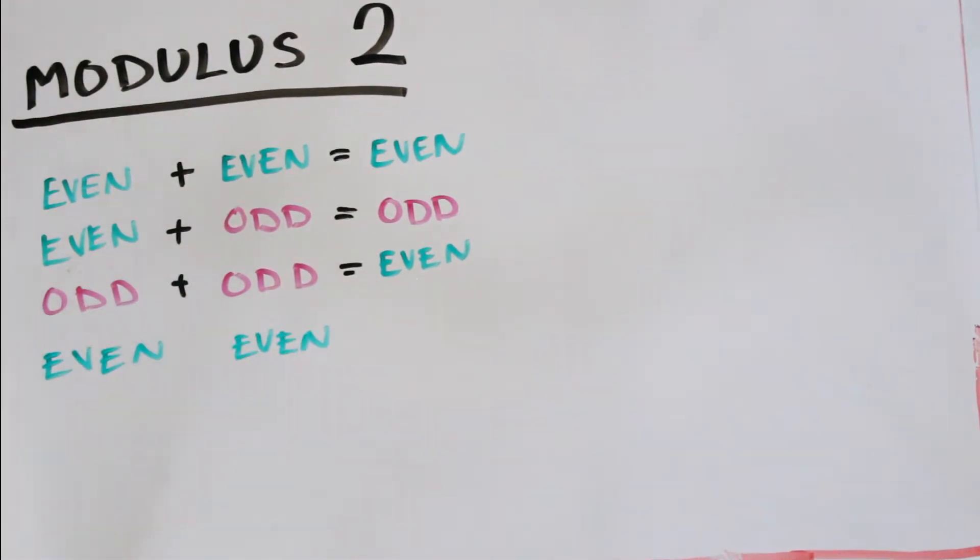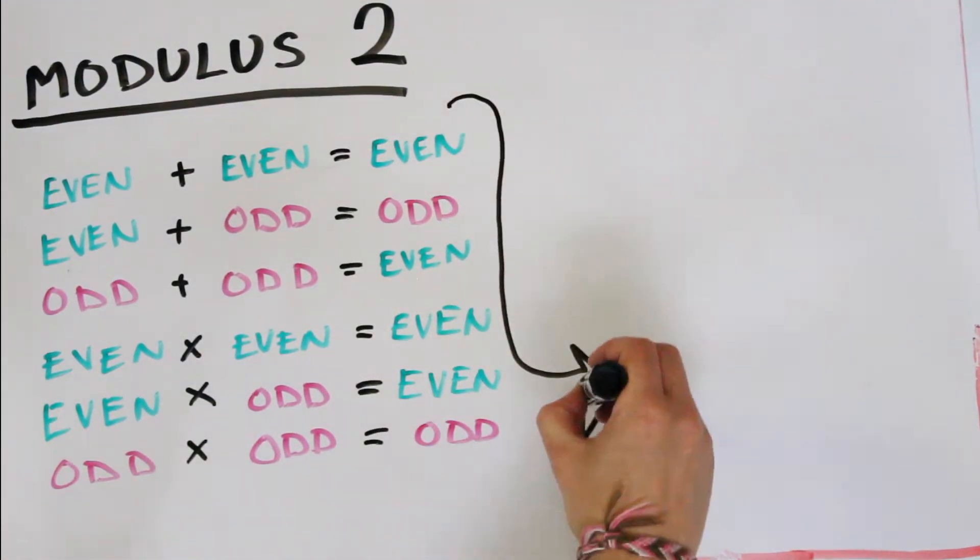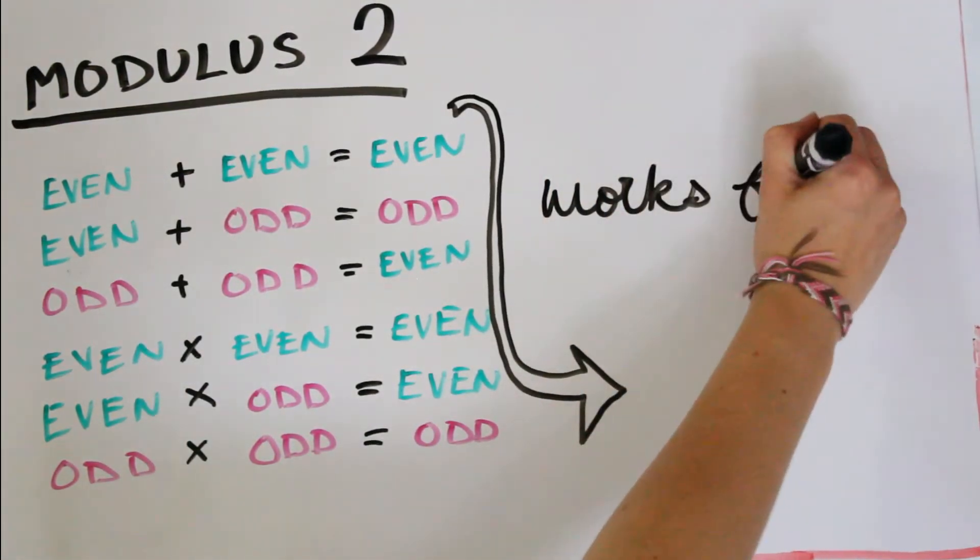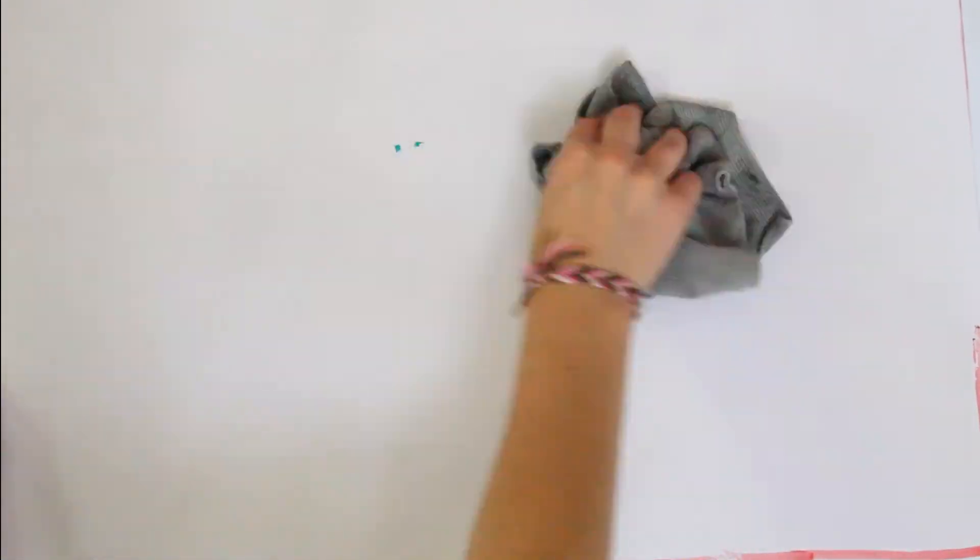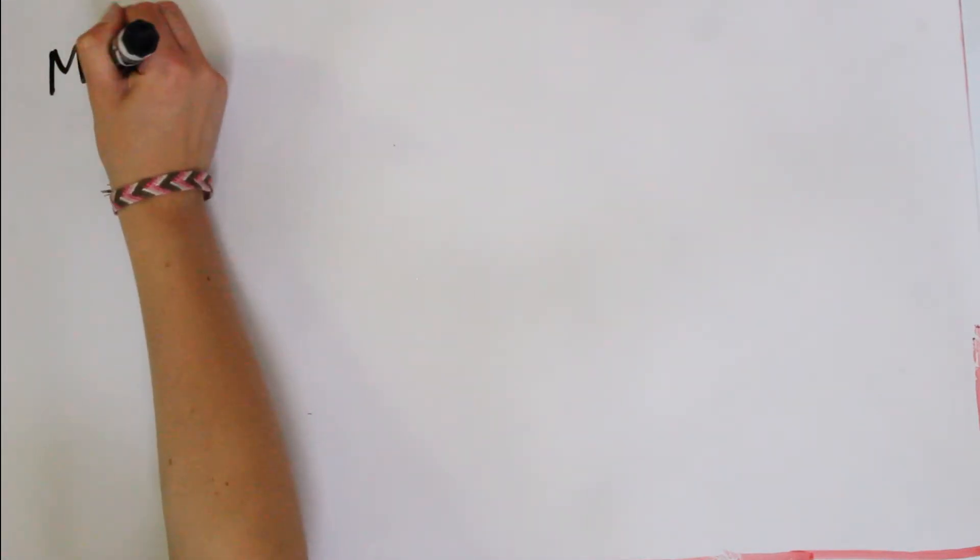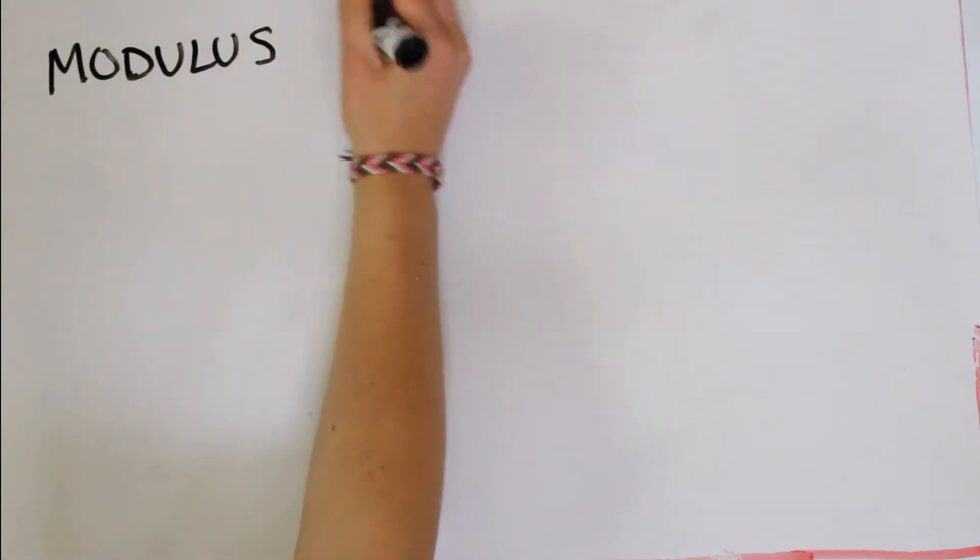And then there's the same rules with multiplication. So even times even is even, even times odd is even, and odd times odd is odd. Well, this kind of rule for various numbers with certain remainders actually works for any modulus.